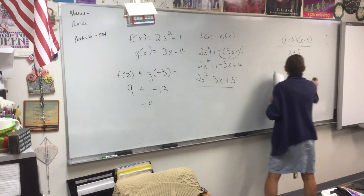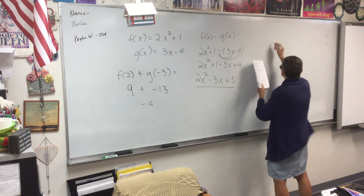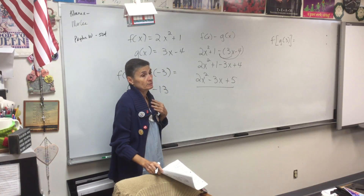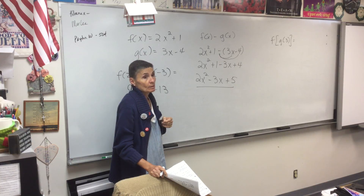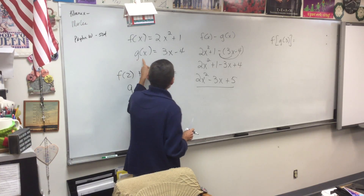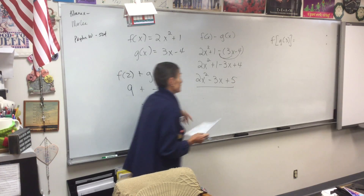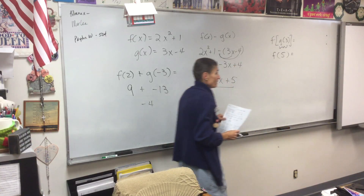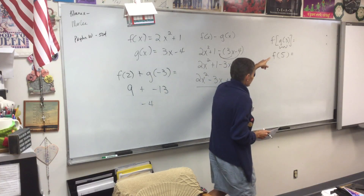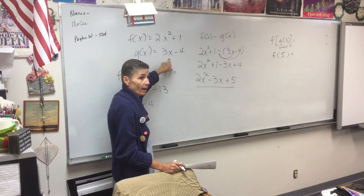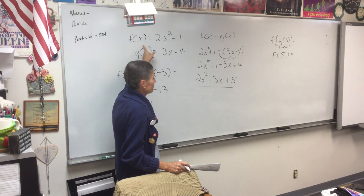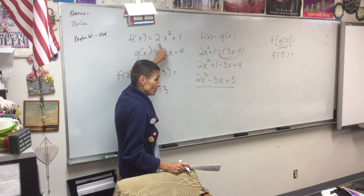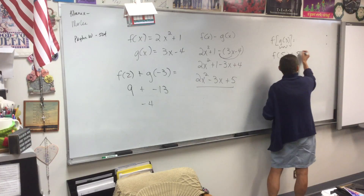We talked about this a little bit ago. What do we do? Plug 3 into g. So what do I get when I plug 3 into g? 5. So g of 3 equals 5, meaning I'm finding f of 5. I put 3 in here like it said - find g of 3, put 3 into g, got 5. Now I do f of 5. Remember when you do f of 5, you're going to square first: 5 squared is 25, times 2 is 50, plus 1, so your answer is 51.